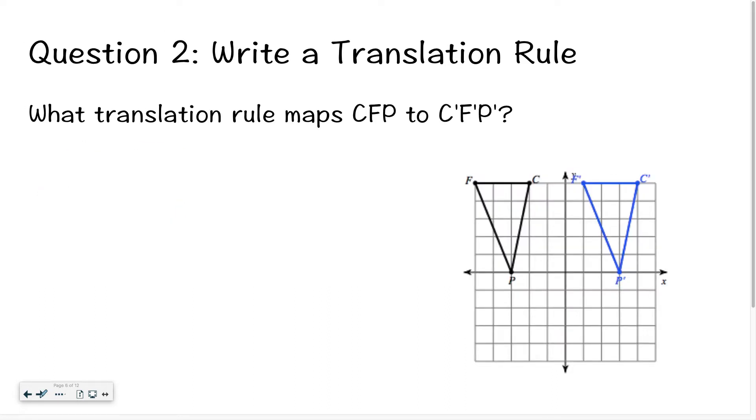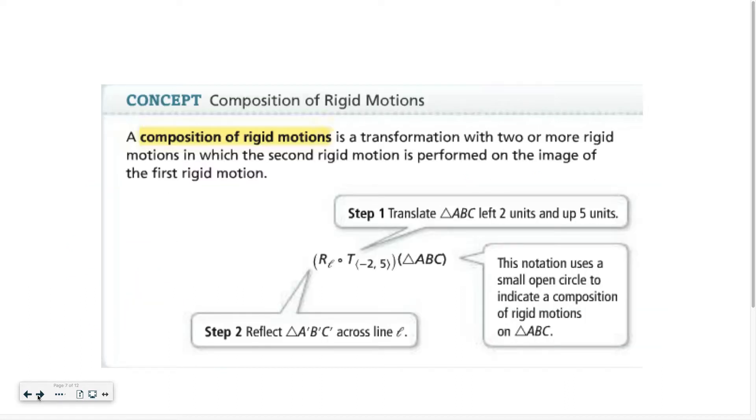What translation rule maps triangle CFP to triangle C'F'P'? Hopefully you said that translation moved in the positive 6 direction, so it moved to the right 6 units. And it didn't move up or down, so I'm going to use a 0. Do not just do this. This answer right here is wrong. You have to have an X and a Y. So even though it's 0, don't forget your Y.